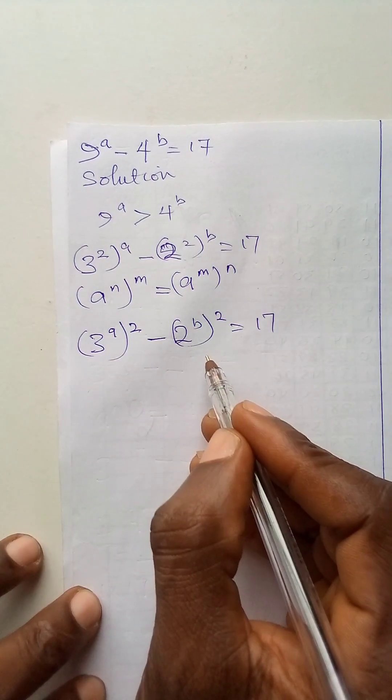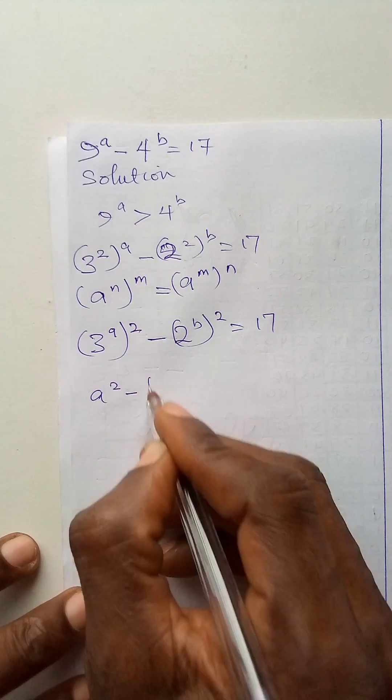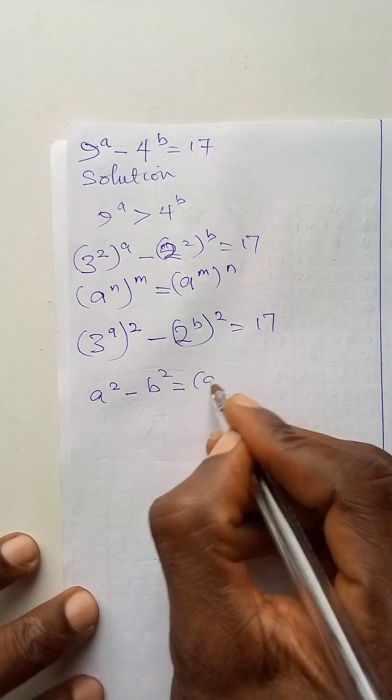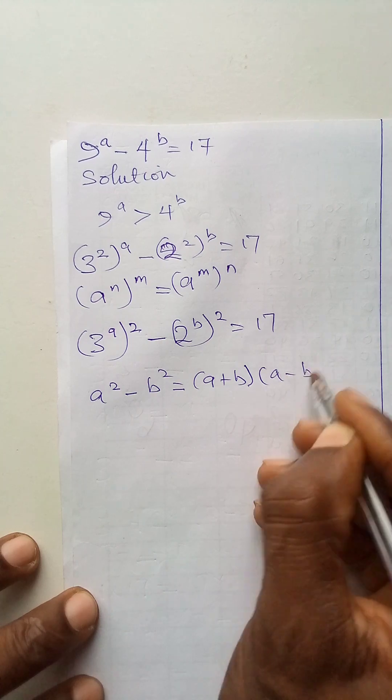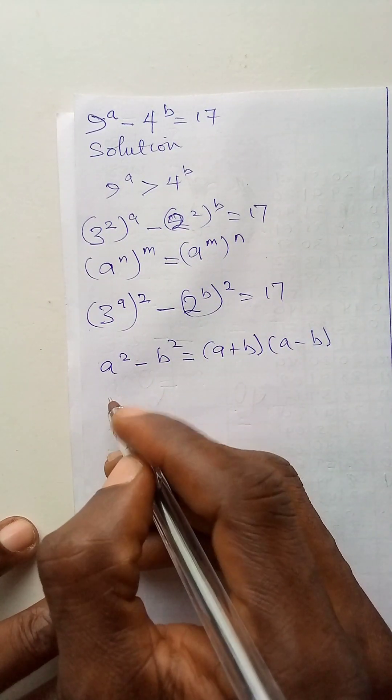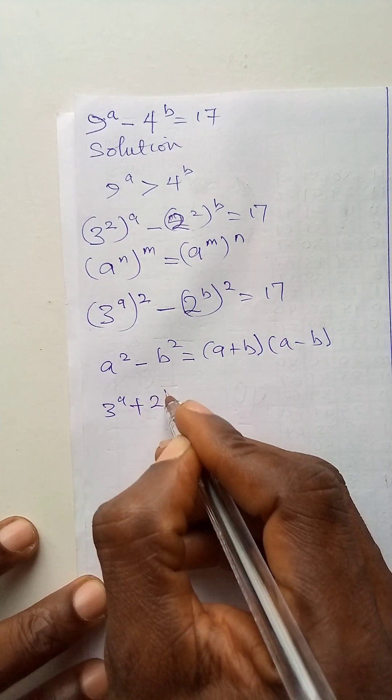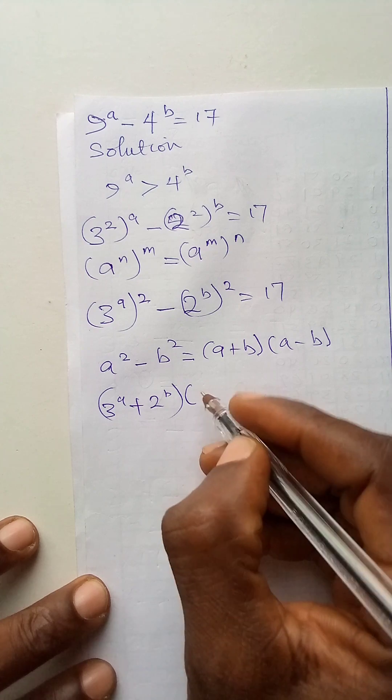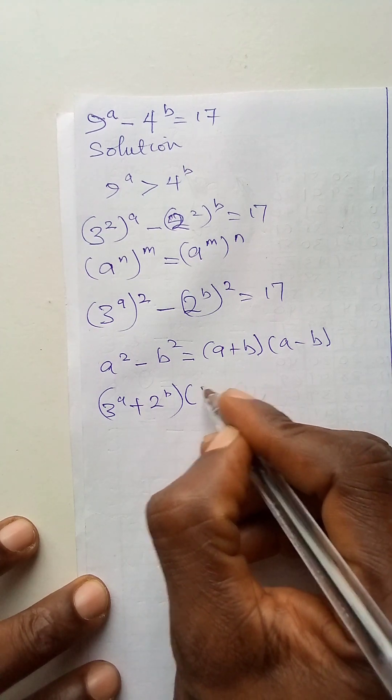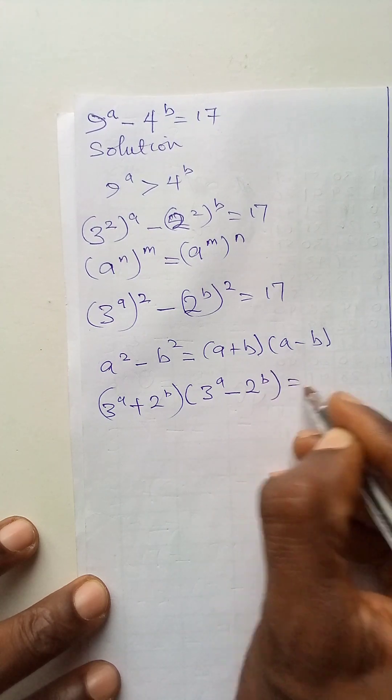Now, let me express this as difference of 2 squared. Let's remember, a to power 2 minus b to power 2 is a plus b in a bracket and a minus b in another bracket. So I will express this one like this. That becomes 3 to power a plus 2 to power b in a bracket. In another bracket, we'll have 3 to power a minus 2 to power b is equal to 17.